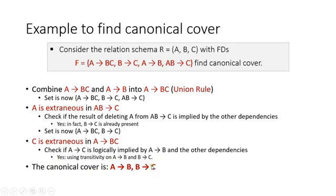By removing C, the canonical cover for the given question is: A determines B and B determines C. Checking Fc, it is A determines B and B determines C. From this, all the original functional dependencies can be derived using Armstrong's axioms. This is the example of how to find the canonical cover.